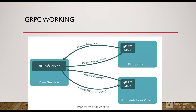Let's see how gRPC works. We have a gRPC server — let's say it is a C++ server — and we have two clients: a Ruby client and an Android Java-based client. They make a request to the server and get a response. Basically, they are using a method defined on the server in the server's proto file. The clients call that method from the client to the server, the server knows which method to call, and within that method it returns whatever logic is written back to the client in the response.